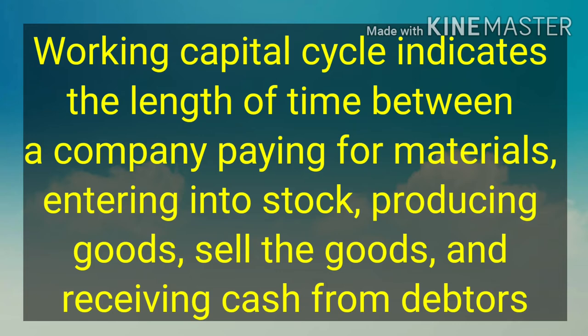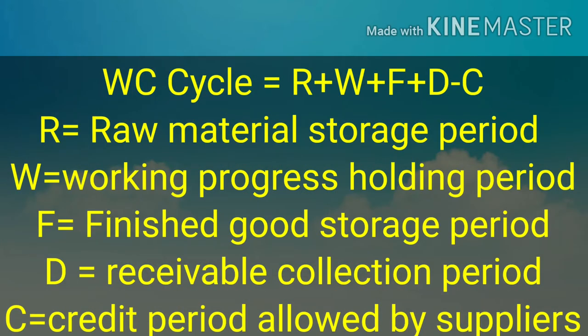The working capital cycle is expressed in days, not in amount — it is the number of days taken. The working capital cycle can be calculated by the formula: Working Capital Cycle = R + W + F + D − C, where R is the raw material storage period, W is the work in progress holding period, F is the finished goods storage period, D is the receivables collection period, and C is the credit period allowed by the suppliers.